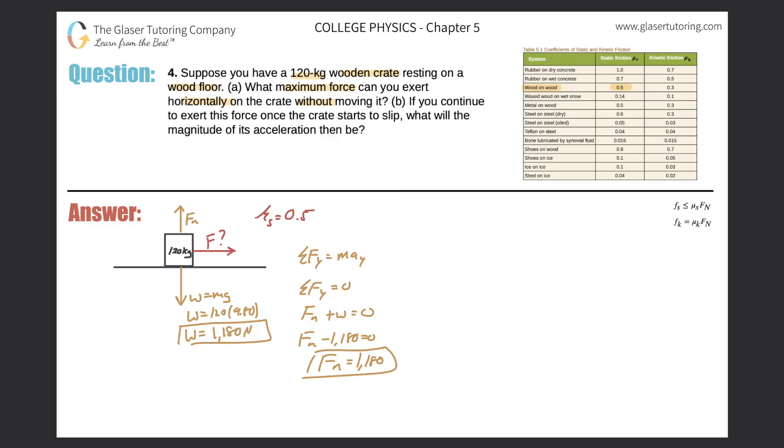Now we can finally use our formula over here on the right-hand side, the static frictional formula. So the force of static friction will be less than or equal to the coefficient of static friction multiplied by the normal force. So the frictional force of static friction less than or equal to 0.5 multiplied by the normal force of 1,180. So the static frictional force, the maximum value can be 0.5 times 1,180. So we get a value of 590.